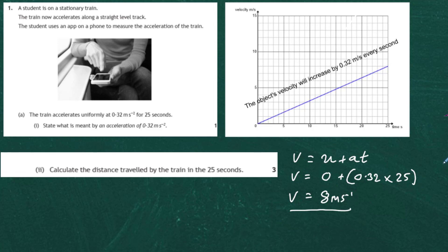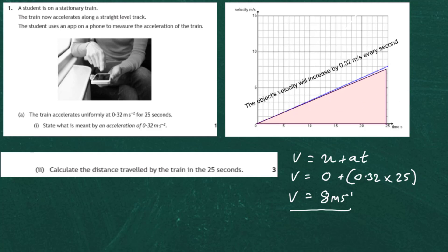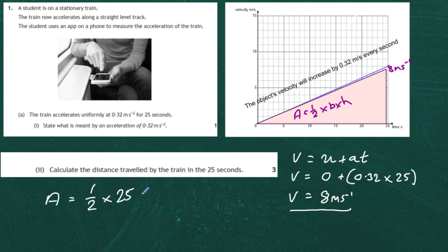Now we know the speed at 25 seconds is 8 m/s. The area under the velocity-time graph gives the displacement. The area is a triangle with base 25 seconds and height 8 meters per second. Area = ½ × base × height = ½ × 25 × 8 = 100. Therefore the displacement is 100 meters.